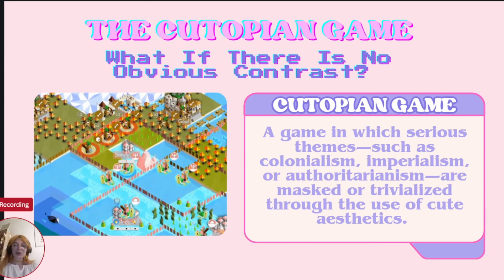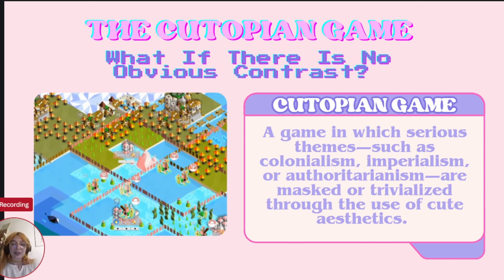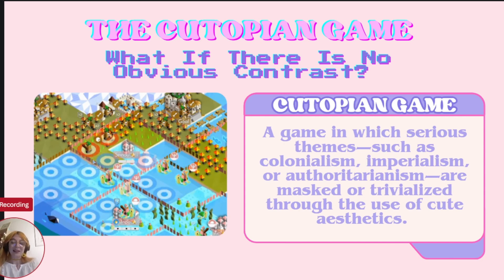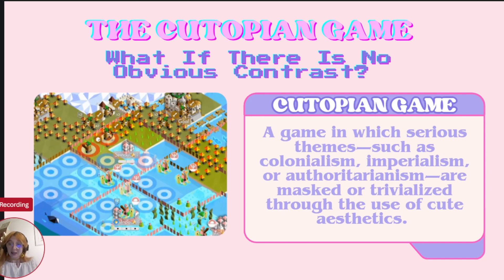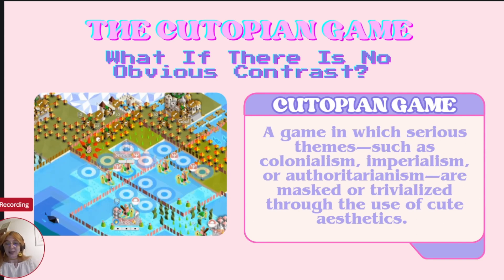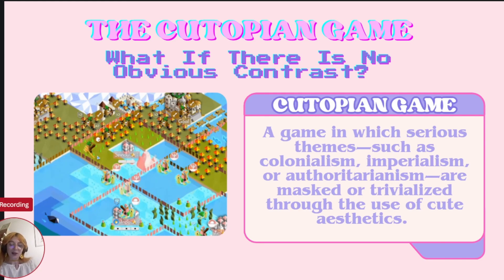Unlike other media where viewers or readers are passive consumers, video games place players in control of these systems. By controlling and participating in these mechanics, players become active participants in the normalization of these ideas. In other words, the interactivity of video games, especially in cutopian games, can deepen the trivialization of serious issues, blurring the lines between lighthearted gameplay and the underlying political or historical realities that are being represented.